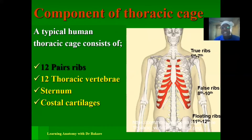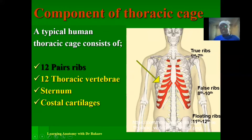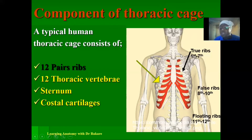Let's look at the ribs — 24 in number, 12 pairs, with 12 on the right and 12 on the left. They span from the thoracic vertebra in the posterior part to the sternum anteriorly. The ribs are classified into three types. The true ribs are called such because they form a direct connection with the thoracic vertebra posteriorly and the sternum anteriorly. These are ribs 1 through 7, directly connected to the sternum anteriorly and the thoracic vertebra posteriorly.